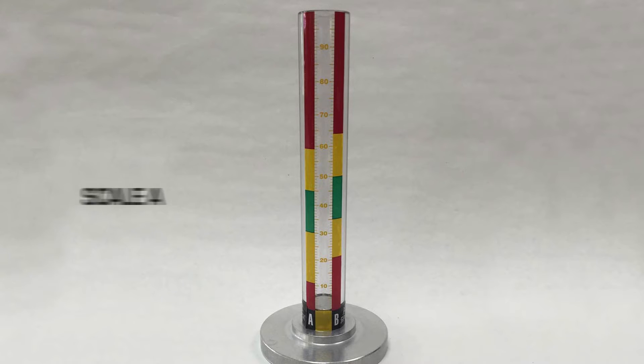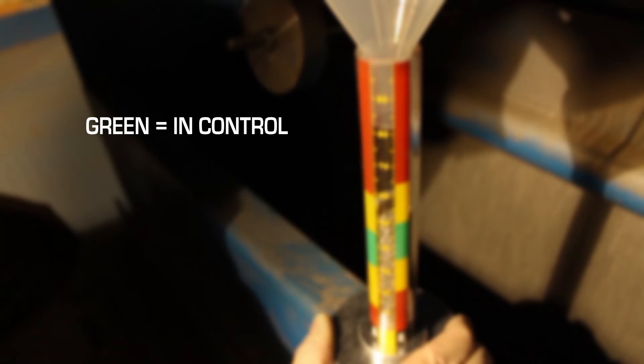Notice that scale A is on the left and scale B is on the right. If the shot or grit mix is in the green, you are in control and no action is needed.